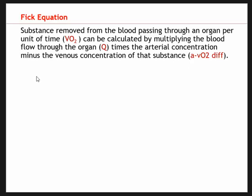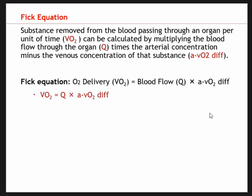How do we calculate that? By multiplying the blood flow through an organ — which we know is cardiac output, the amount of blood pumped per minute — times the arterial concentration minus the venous concentration of that substance, which is oxygen. We learned the a-vO2 difference in the last video. We can look at it here and explain these variables a bit more. VO2 is the amount of oxygen we're consuming, but we're mainly concerned with how much oxygen is being delivered to the working muscle.